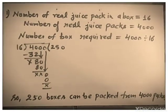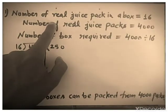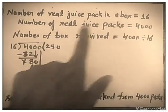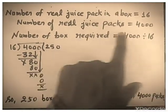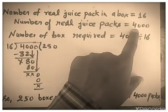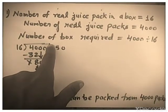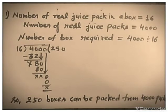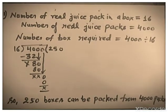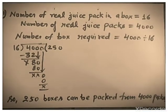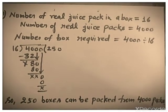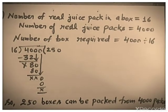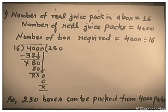See the solution. Number of Real Juice packs in a box is given — that is sixteen. Number of Real Juice packs is also given — four thousand. The question is: number of boxes required to pack these four thousand Real Juice packs equals four thousand divided by sixteen. When we divide the total number of Real Juice packs by the number of packs in a box, we get the number of boxes.